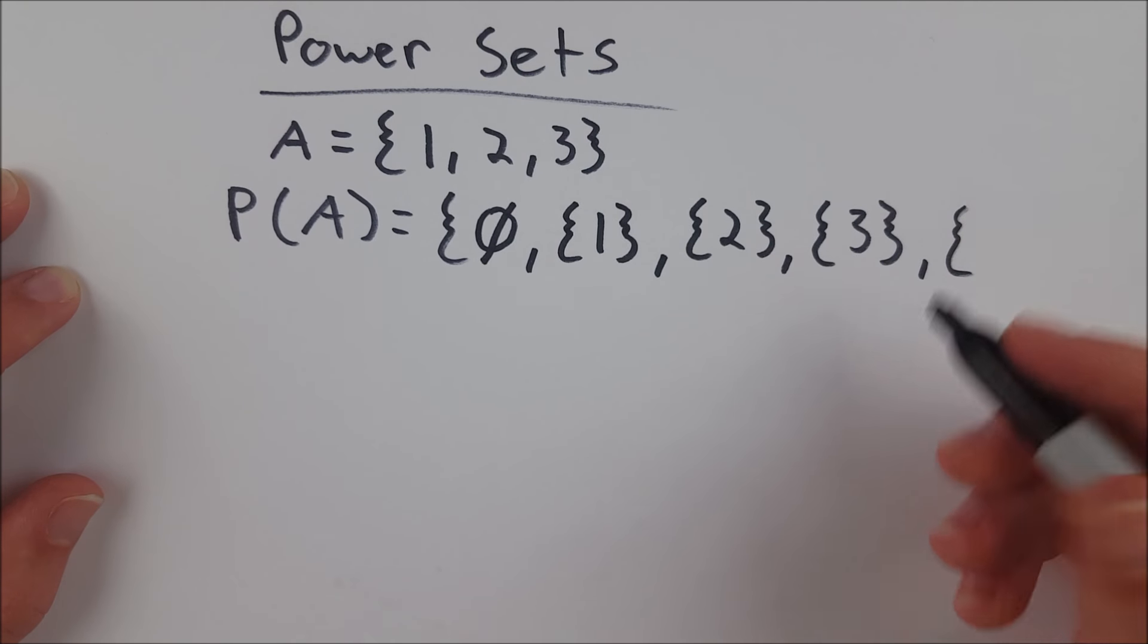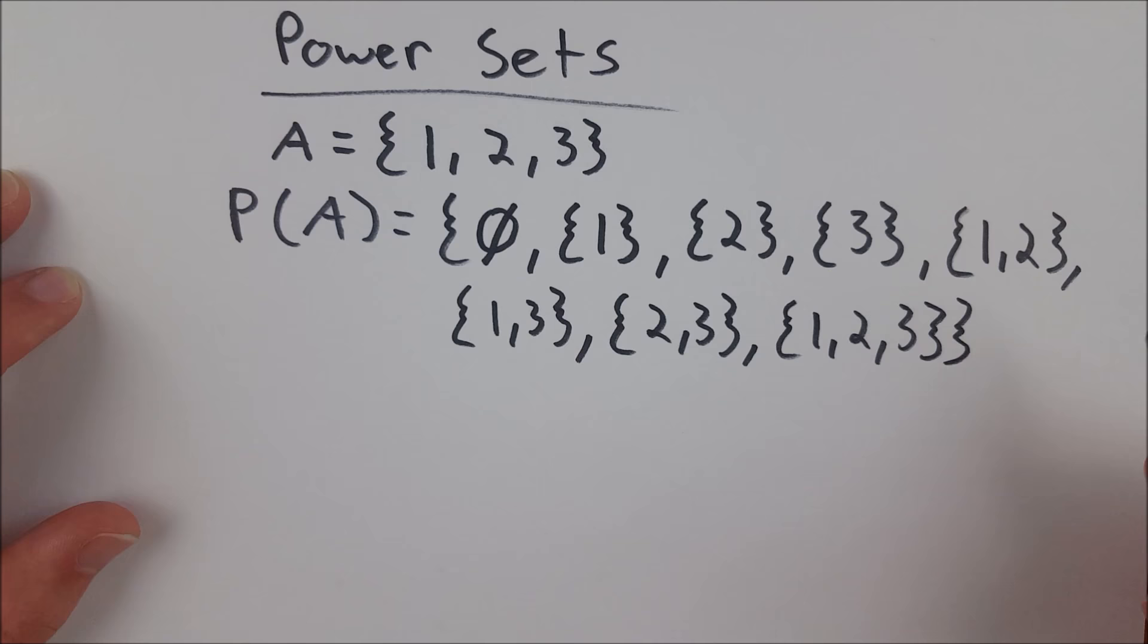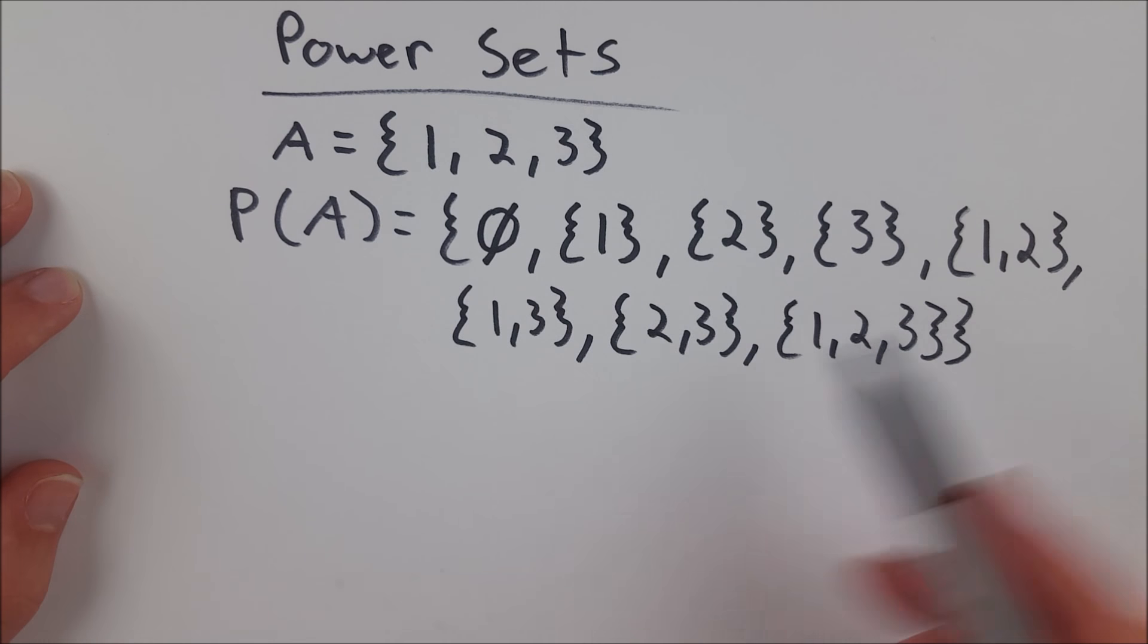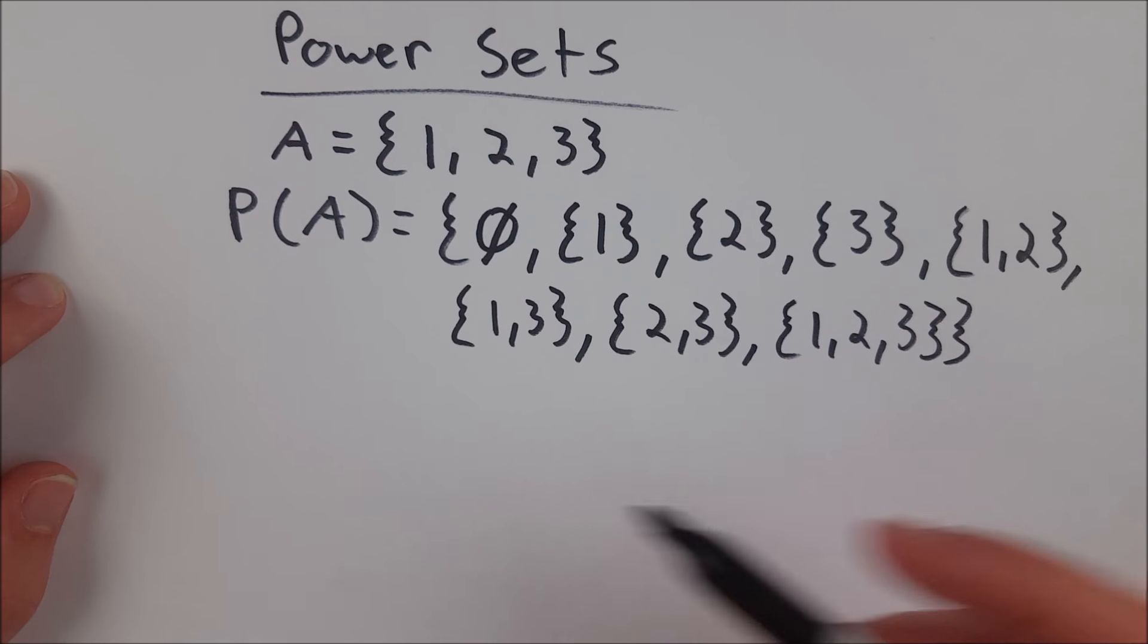So let's continue. We have the set containing one, the set containing two, the set containing three, the set containing one and two. And I'll just write the rest of these out and we'll skip to that. And that is our power set. I'm sorry that it spans two lines. It makes it a little tougher to look at. But that's the power set.